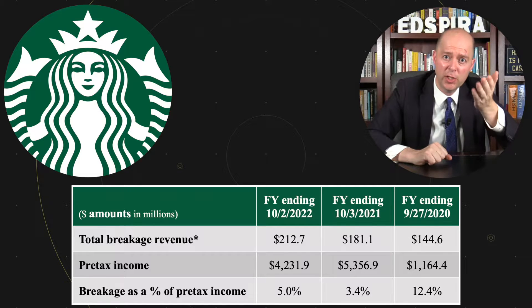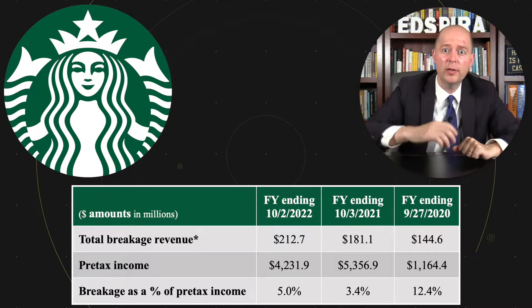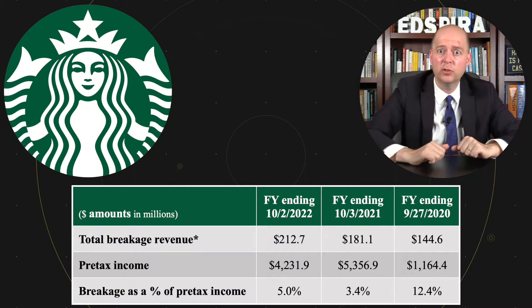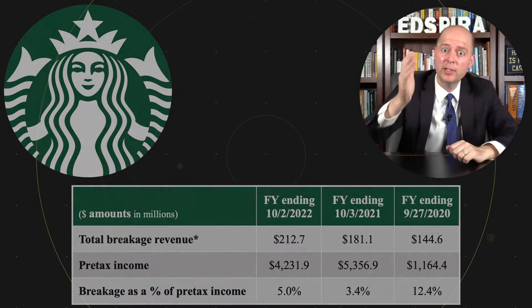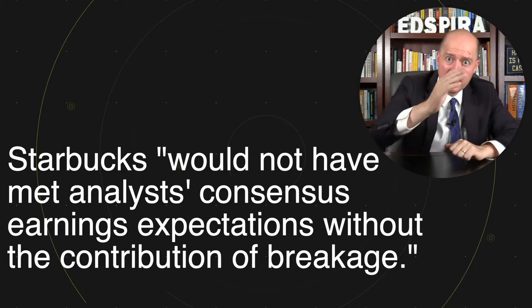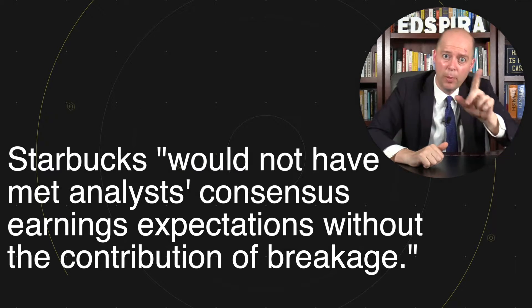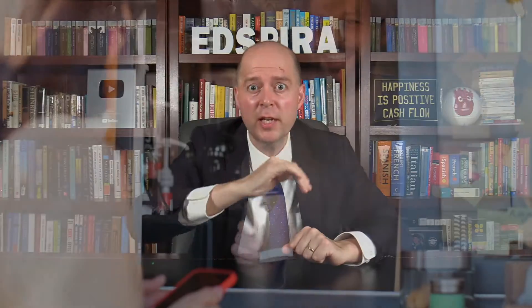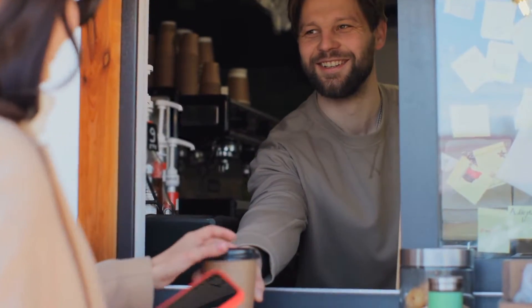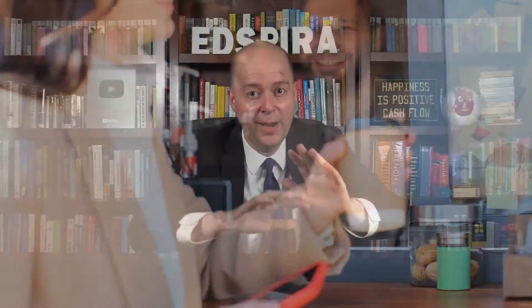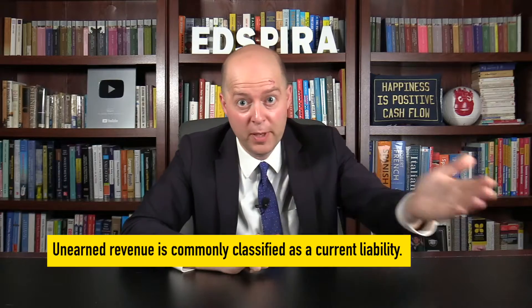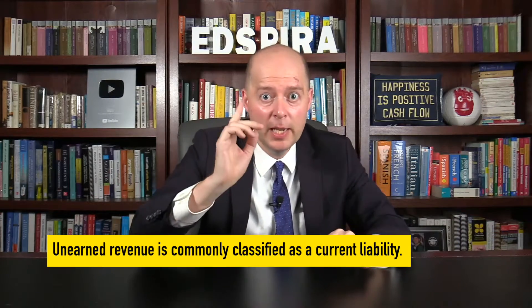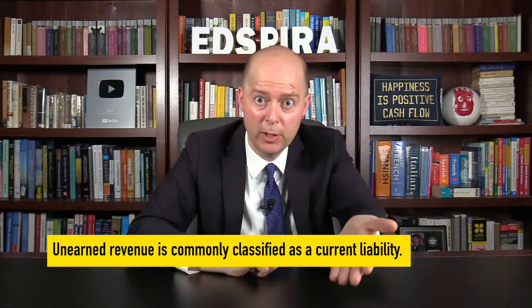A labor federation even wrote a letter to the SEC calling for Starbucks to make more extensive disclosures about how it estimates its breakage revenue, as the federation said that Starbucks would not have met its earnings expectations but for the breakage revenue. Now, unearned revenue — whether it be from gift cards or other sources — is usually classified as a current liability.